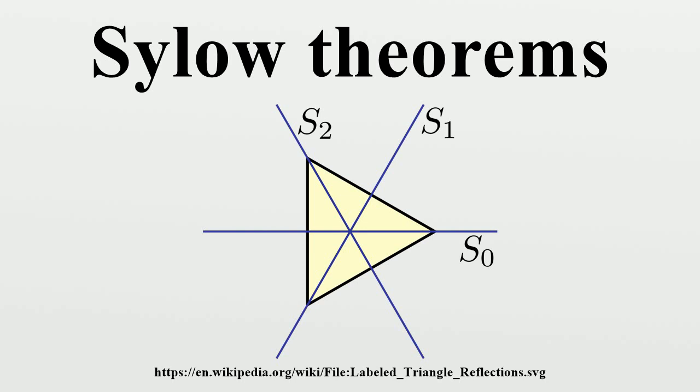Now if H is a Sylow P subgroup, |H| equals |P| equals |g^(-1) P g|, so that H equals g^(-1) P g for some g in G.